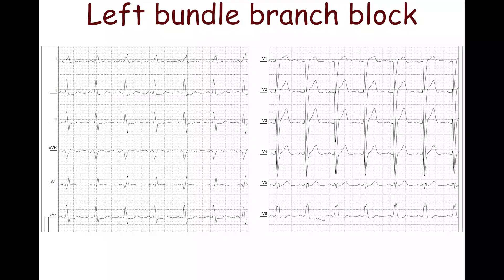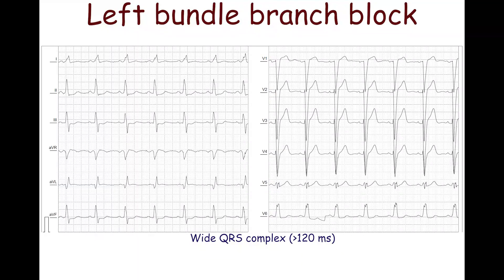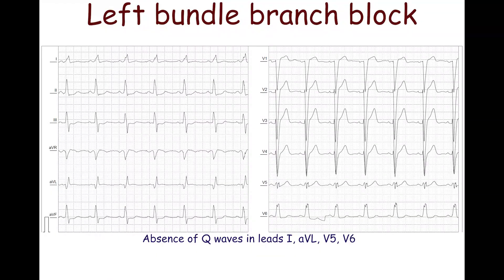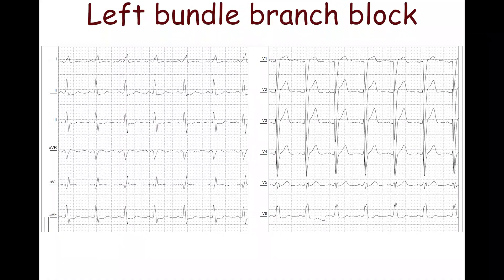Left bundle branch block is characterized by a wide QRS complex — more than 120 ms — a wide monophasic often notched R wave in lead V6 (also often in leads I, AVL, and V5), a dominant S wave in lead V1, and absence of Q waves in the lateral leads. The ST segment is displaced in the opposite direction to the dominant wave of the QRS complex. The direction of the T wave is usually opposite to the dominant wave of the QRS complex.